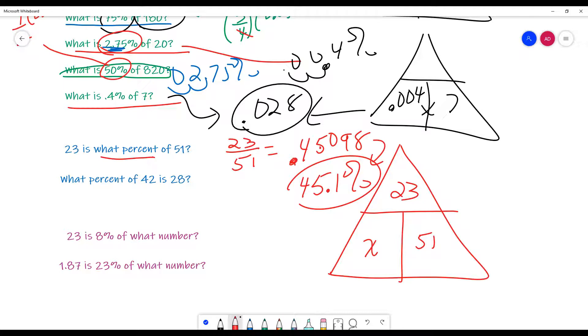Just remember, 0.45098 can be rounded to 0.451. And then, to go from a decimal to a percent, you multiply by 100. And that decimal goes two places to the right. So, that becomes 45.1%.